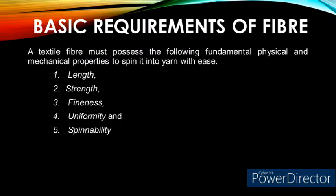Basic requirements of a textile fiber. A textile fiber must possess the following fundamental physical and mechanical properties to spin it into a yarn. They are: number one — length; number two — strength; number three — fineness; number four — uniformity; number five — spinability.